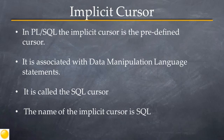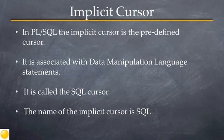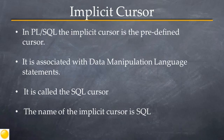As its name suggests, an implicit cursor is a predefined cursor that exists within an Oracle database. The implicit cursor is associated with data manipulation language statements. DML statements are the insert, update, delete, and merge statements. The name of the implicit cursor is SQL and it's often called the SQL cursor.